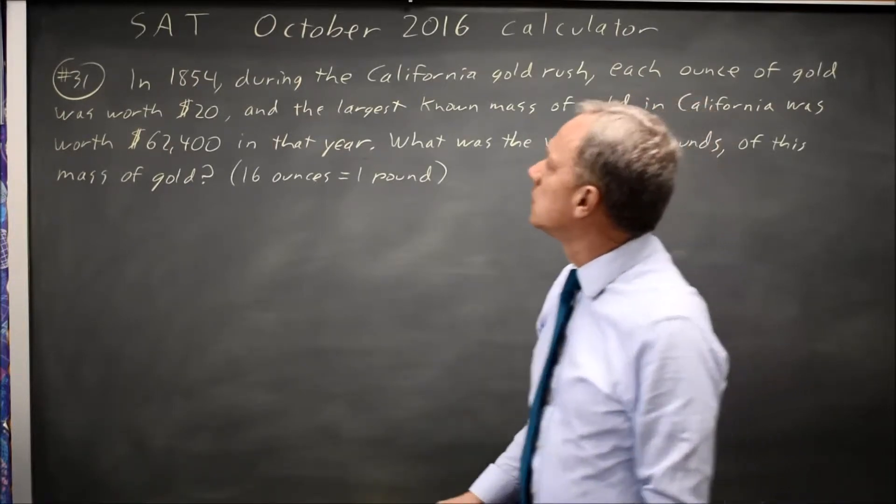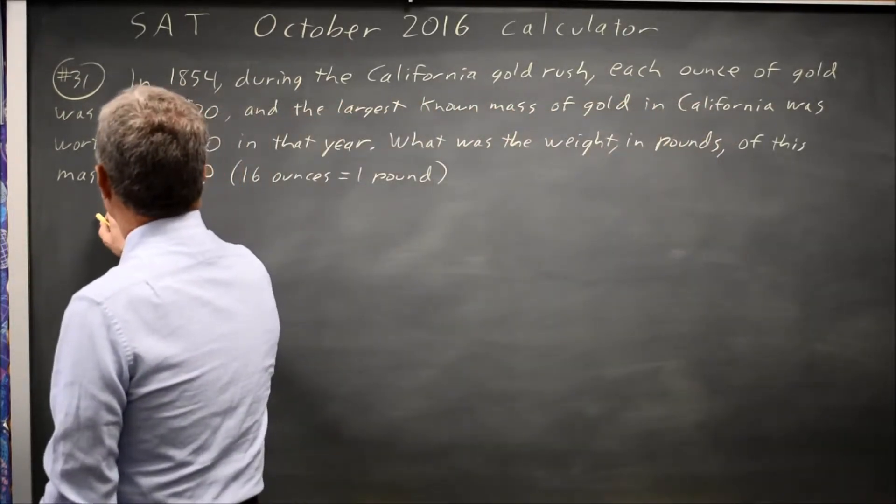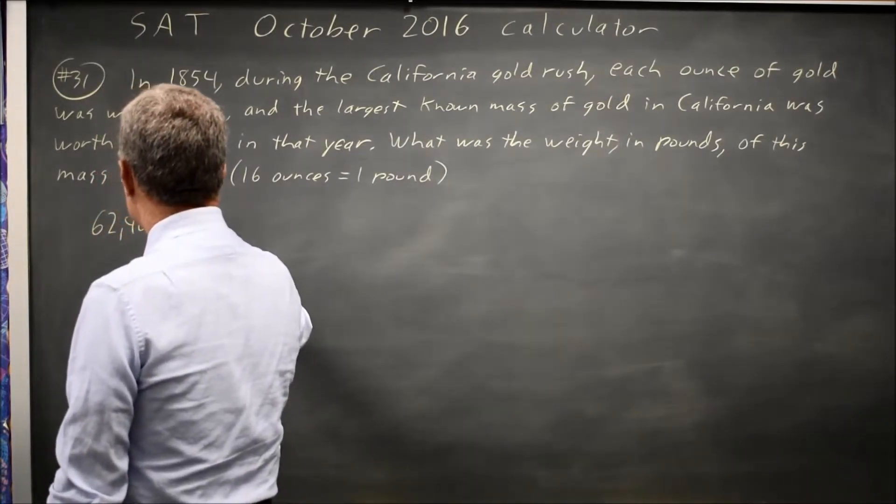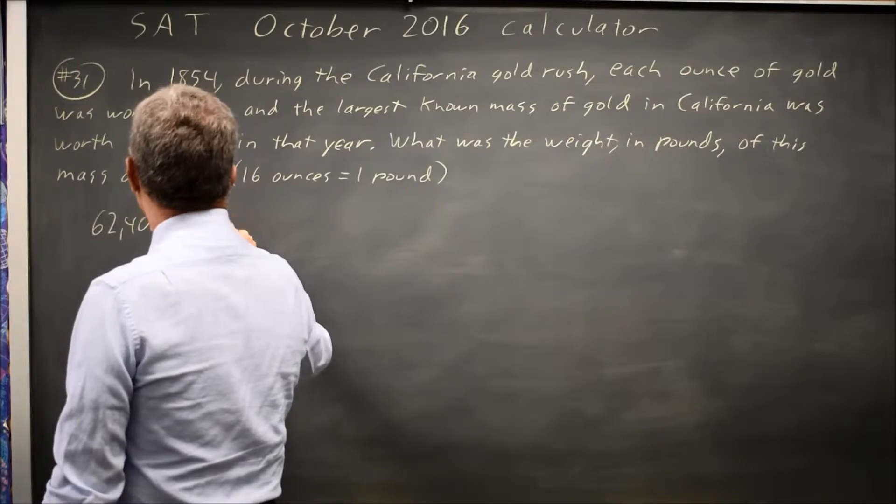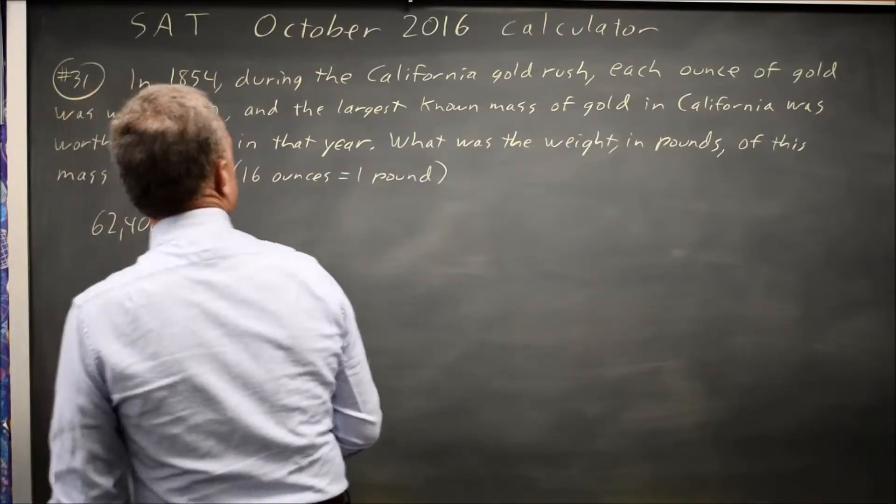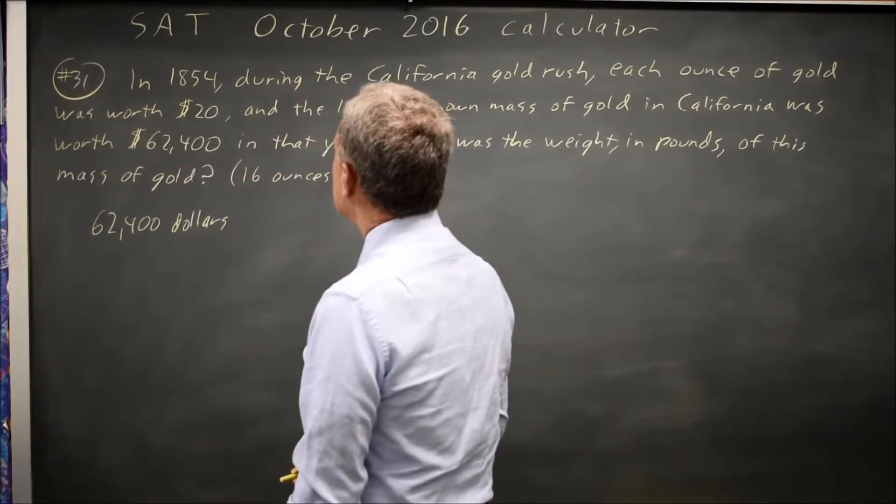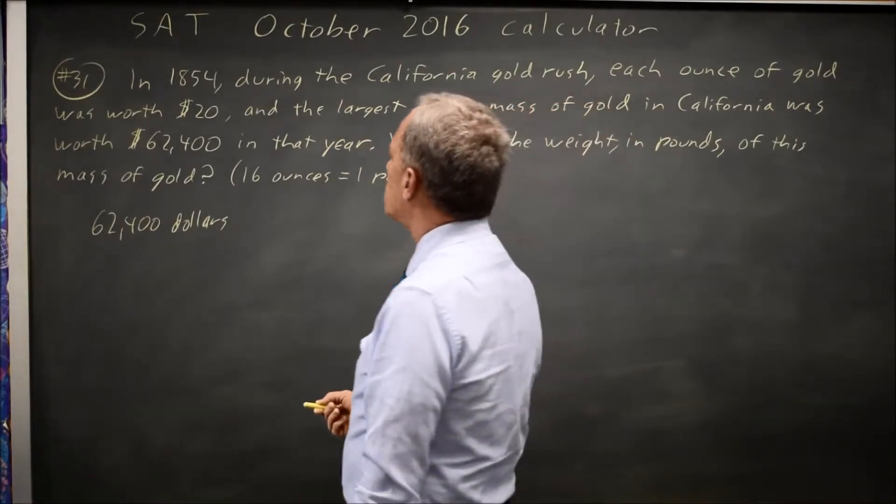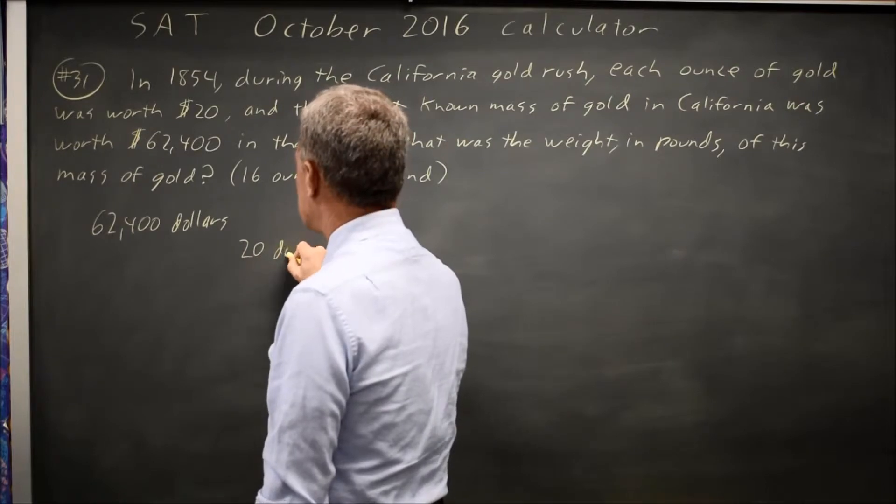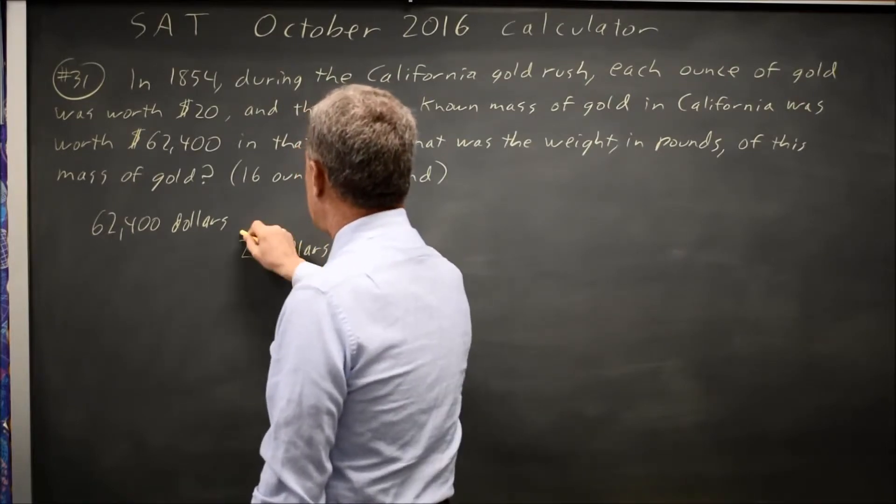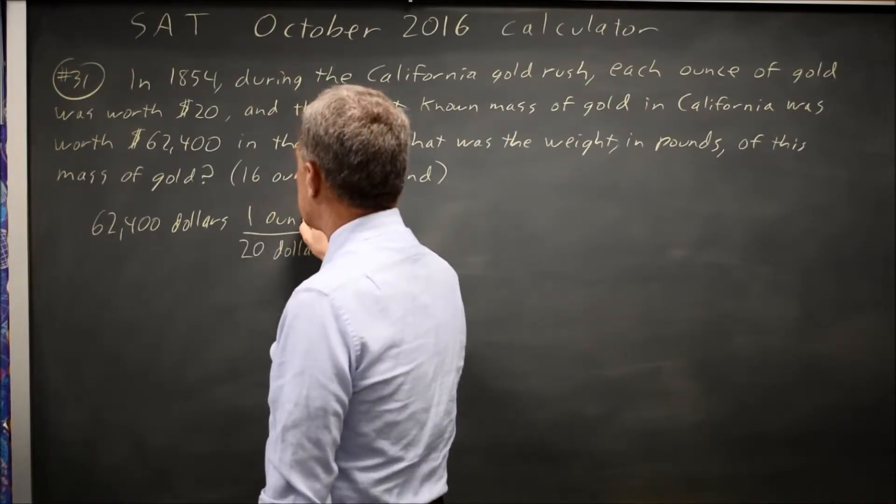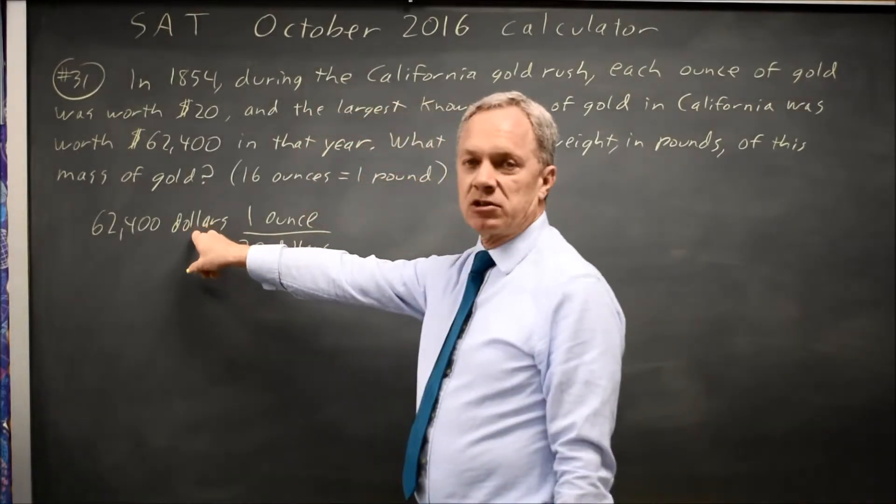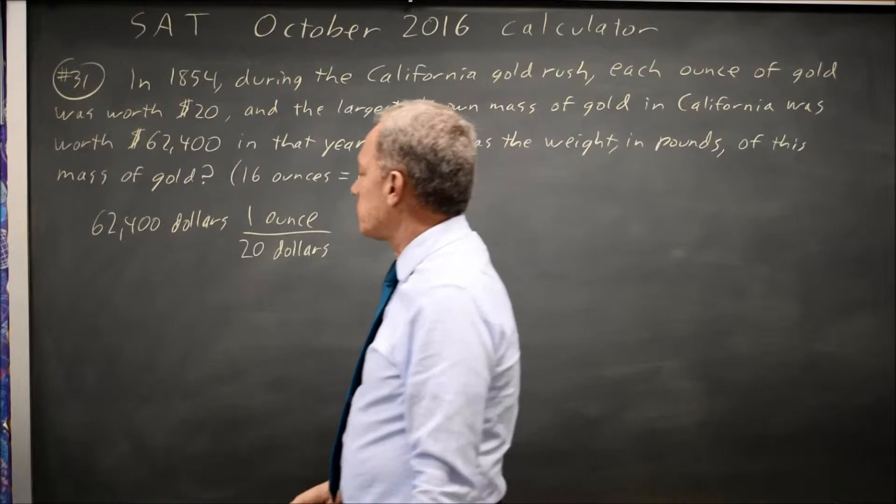So I have $62,400, and if I want to convert dollars to ounces, I like to do it the way we do in chemistry: multiply by a fraction equal to 1. So $20 equals 1 ounce, and I know that I want dollars in the denominator to cancel dollars that I'm multiplying by.